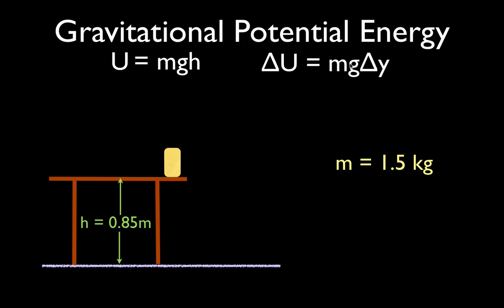This is a little bit different, but this is a better equation because we're going to calculate the change. Delta U — delta means the change in potential energy — is equal to the mass times G times the change in the Y position, the change in the height of the object. Because when you change an object's potential energy, what you're usually doing is raising the object up or lowering the object within Earth's field relative to the surface of Earth, and therefore changing its potential energy.